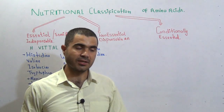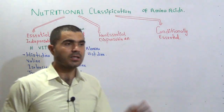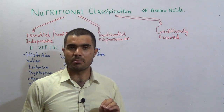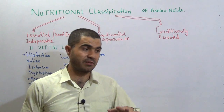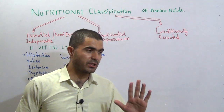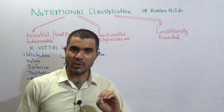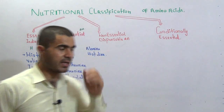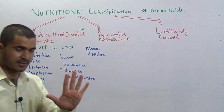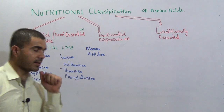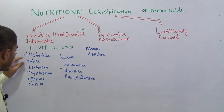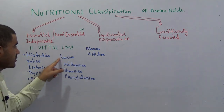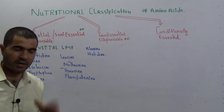Your body still needs these amino acids and you have to take them from the diet. Now we need to remember the names of these amino acids, especially for examination purposes — for multiple choice questions, a student should remember which amino acid belongs to which category. There are ten essential amino acids: histidine, valine, isoleucine, tryptophan, alanine, lysine, leucine, methionine, threonine, and phenylalanine.